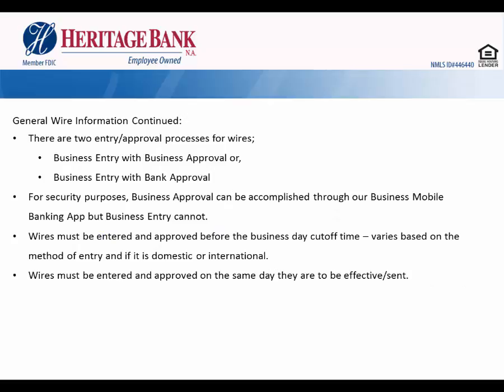There are two types of entry and approval processes for wire transfers in online banking. The first is business entry with business approval — two people from your business complete both the entry and approval steps. One person logs in and enters the wire information; another user logs in and approves the wire. For security purposes and to reduce risk of fraud, the entry and approval must be completed by two different individuals on two different computers. This is an industry standard and best practice method for wire transfers in online banking.